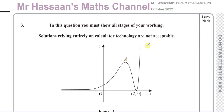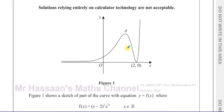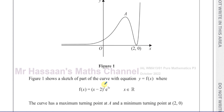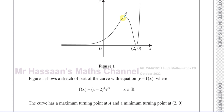Welcome back. This is Mr. Hassan's Maths Channel and this is question number three from the October 2022 Pure Mathematics P3 paper. We're given a graph of the function y = f(x), where f(x) = (x-2)² · e^(3x) for all real x. The maximum turning point is A and the minimum turning point is at (2, 0). We have to use calculus to find the exact coordinates of A.